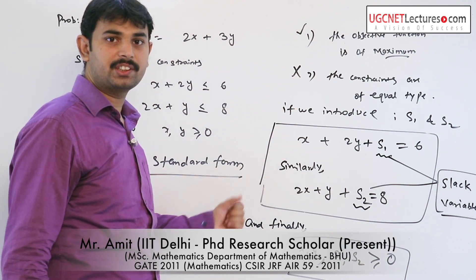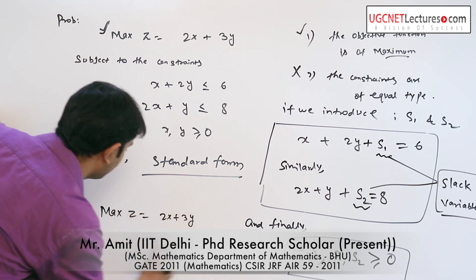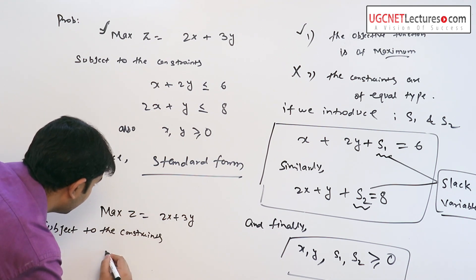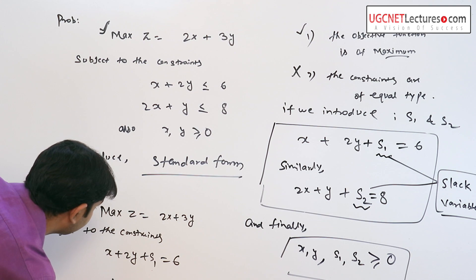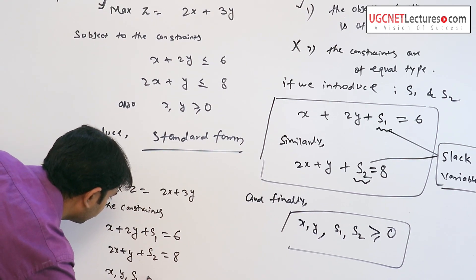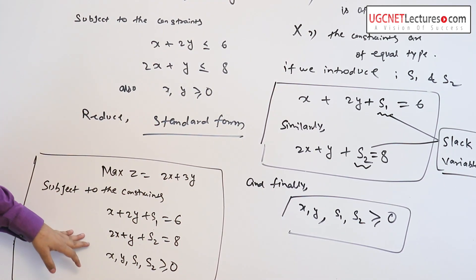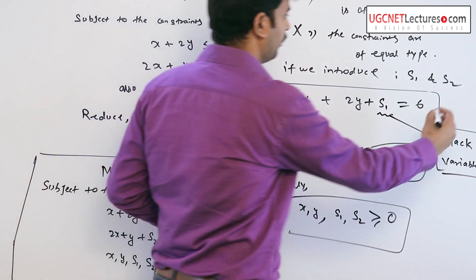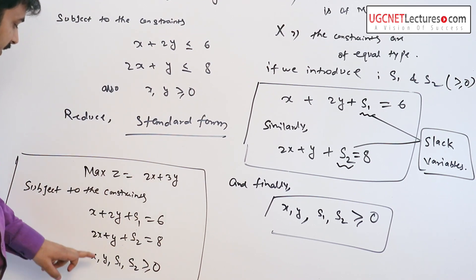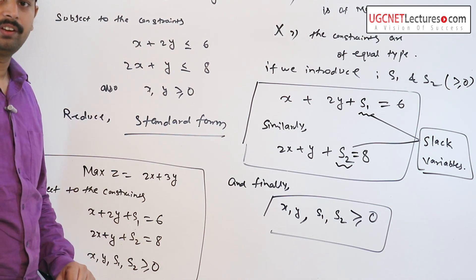The extended form is subject to the constants — all are positive. Here it is in the standard form, where s1 and s2 are introduced such that x plus 2y plus s1 is equal to 6, 2x plus y plus s2 is equal to 8, and x, y, and all the slack variables are non-negative.